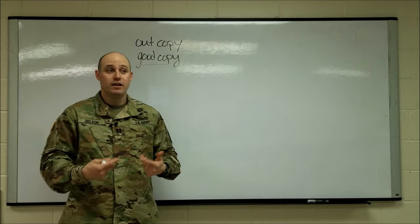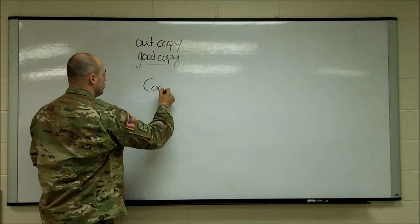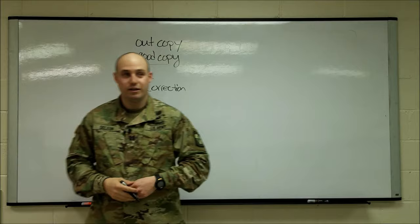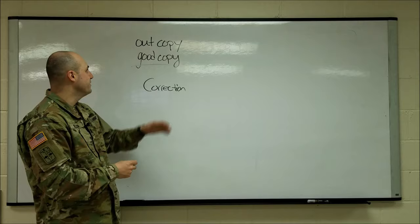If they read me back the wrong grid, let's say this guy goes, Echo Golf, one, two, four, eight, five, nine. What do I say? I say, correction. The grid is, and then I say the grid again until, and then I say out copy over. And then he says it back until he reads it back correctly. And now I say good copy. So that we both are confirmed that the grid is correct and we both have it. That is the proper way to use out copy and good copy.